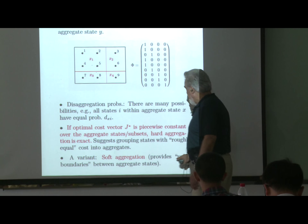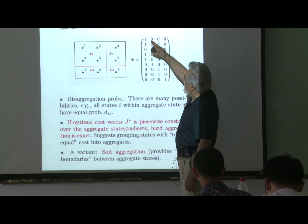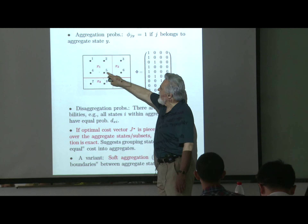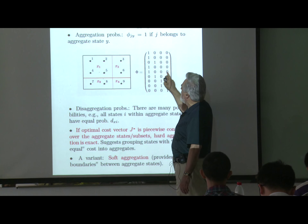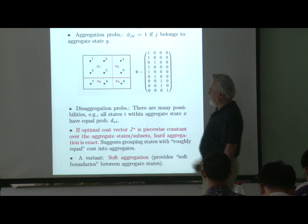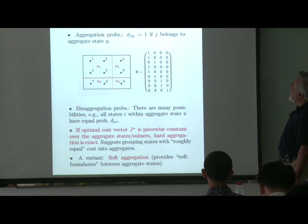There's also a variant called soft aggregation, where the phi entries are not all 0 or 1. For states at the boundary between two aggregate states, it may involve a randomization between the aggregate states — for example, state 5 might have phi entries of one-half, one-half. This provides soft boundaries between the aggregate states and is something that has been used. I'm mentioning it just to give you an idea of the variety of possibilities.